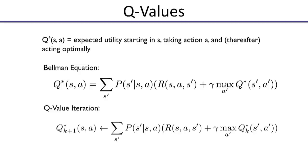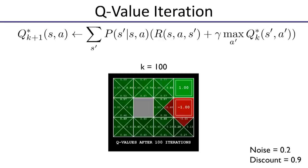Pictorially, if we run Q value iteration on the same grid, we now have four values per state — one for each action — except for exit states where only one action is available. Each action has a Q value associated with it. This gives the optimal Q value for horizon 100, which at convergence is the same as horizon equal to infinity.